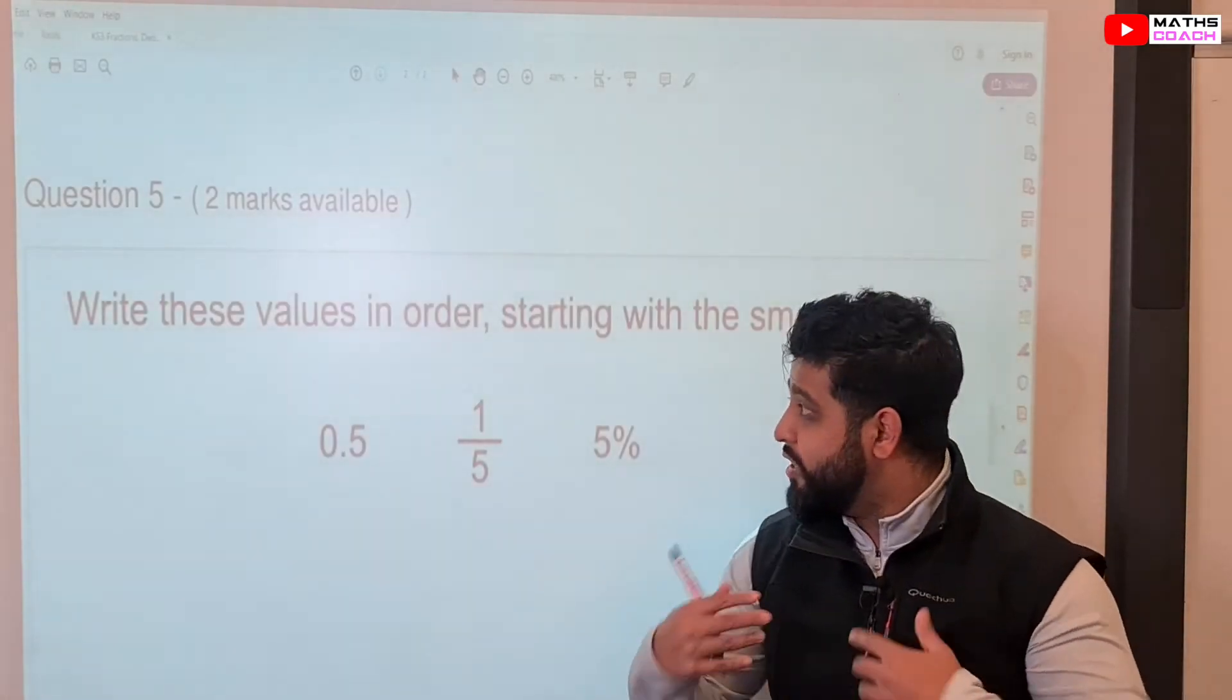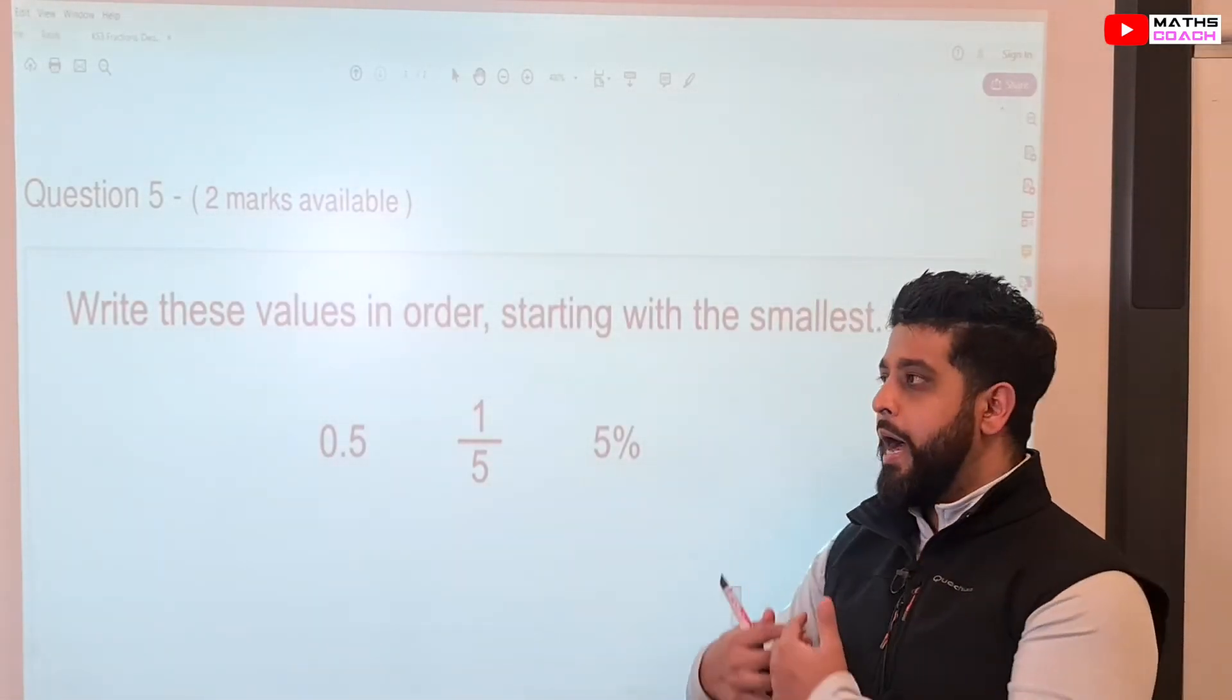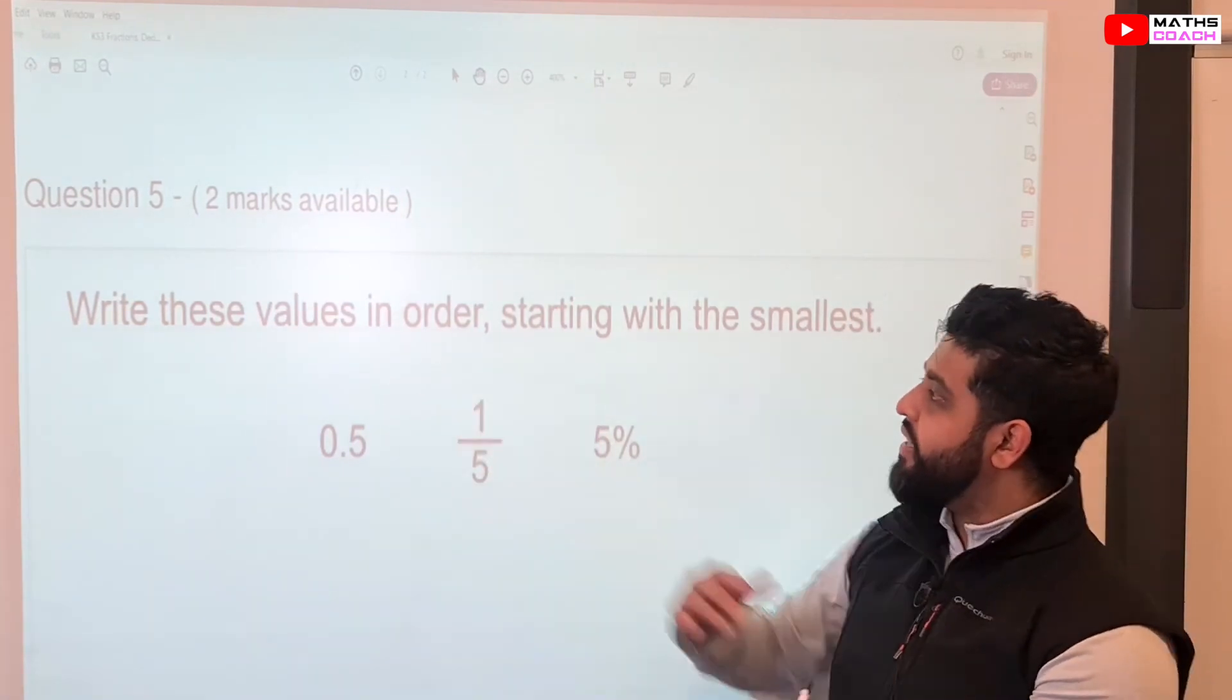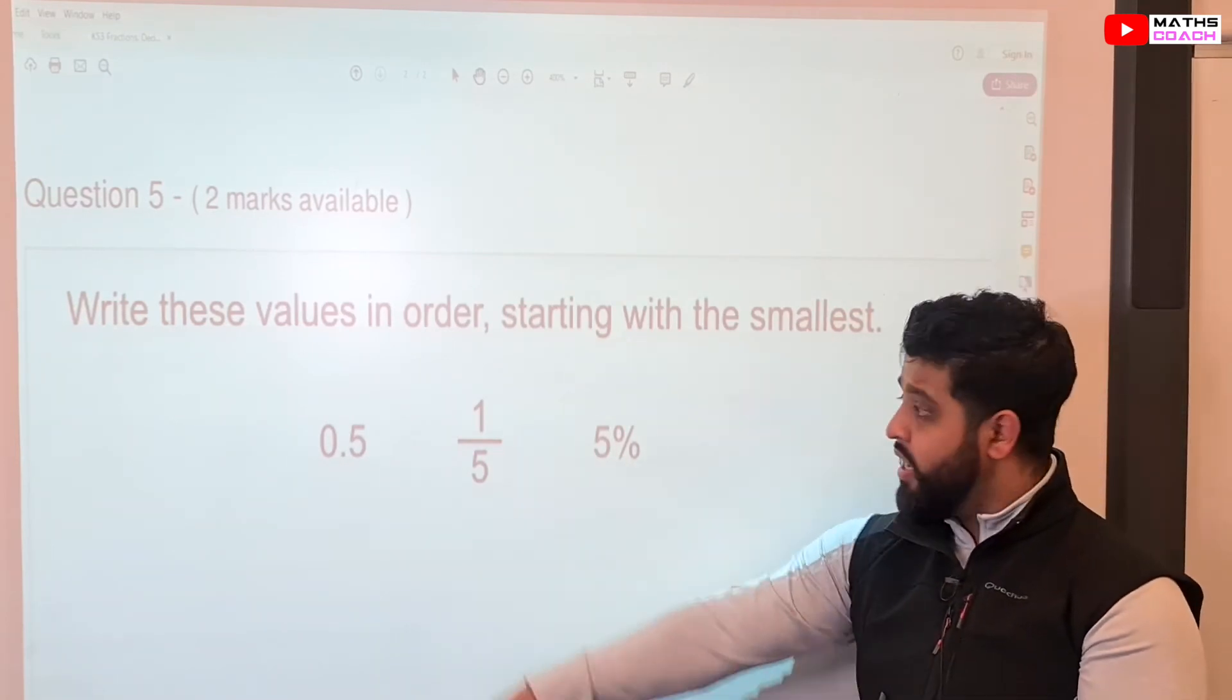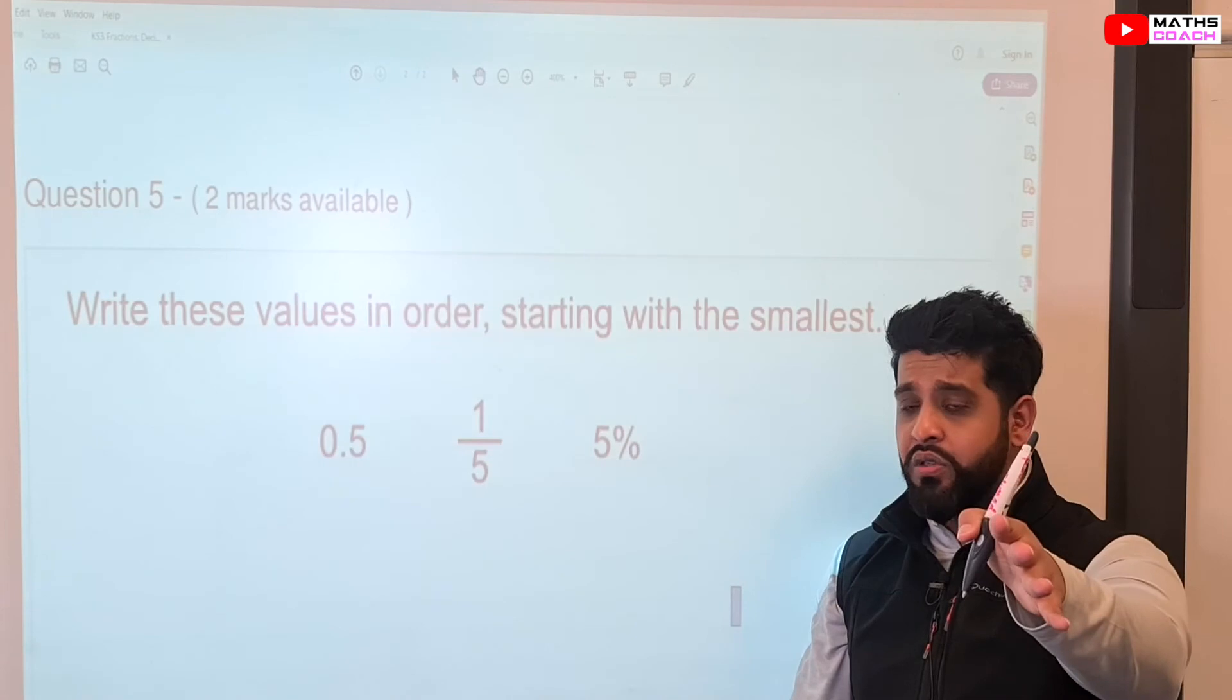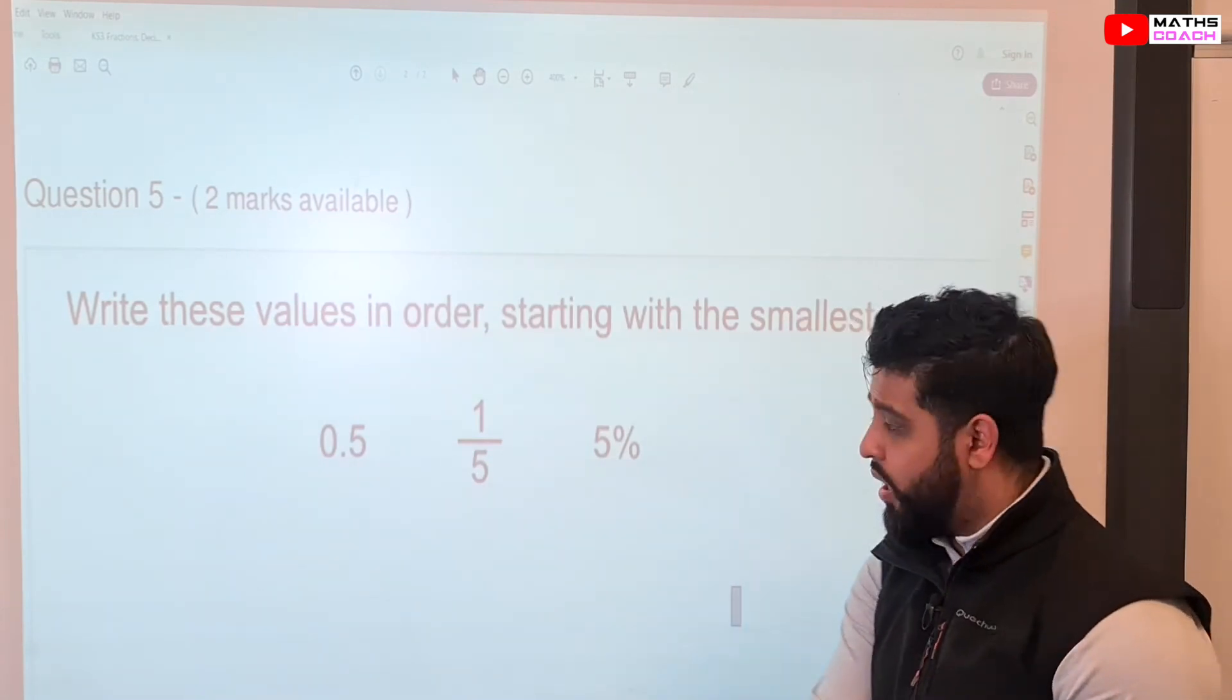Now, the last question, you know, this is what the exam questions build you towards, okay? By being able to answer questions like this. So, it says, write these values in order, starting with the smallest: 0.5, 1 over 5, 5%. Try yourselves first, of course, and then press play again when you are ready.